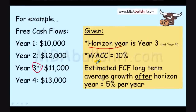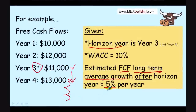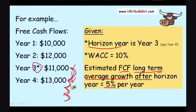The other piece of given information is the estimated free cash flow long-term average growth after the horizon year. So after year 3 — in year 4, year 5, year 6, year 7 — the free cash flow will grow at around 5% per year on average. It does not mean it will grow exactly 5% each year; it just means that on average it will grow 5% per year.